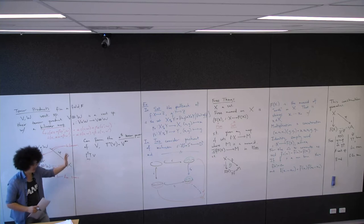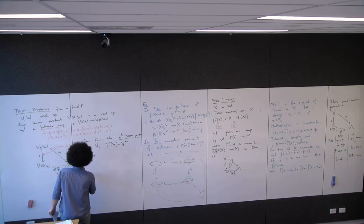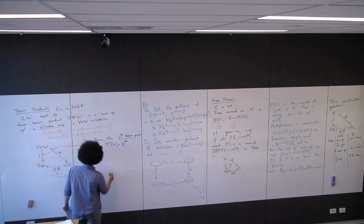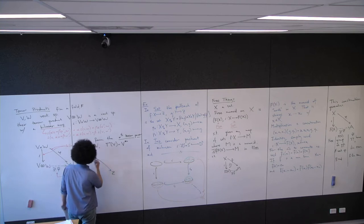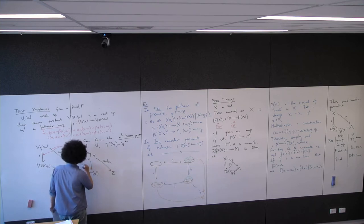We have maps from the nth product of V — this is the symbol for product, which makes sense because the symbol for coproduct is the upside-down version. So T^n(V) with a unique linear transformation. The map from the product is n-linear.